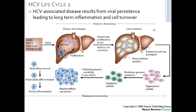Once inside cells, HCV preferentially replicates within the epithelial cells of the liver. The HCV-associated disease is a function of the very high production rate of the virus, putting a lot of stress on those epithelial cells. You have this cycle of necrosis of the infected liver cells — they eventually die from the HCV infection, and you're making lots and lots of virus, killing lots and lots of epithelial cells.